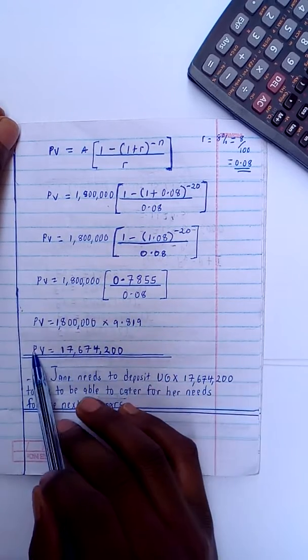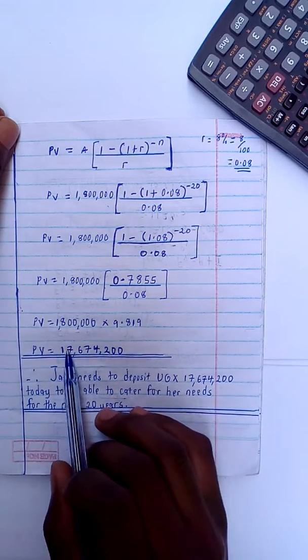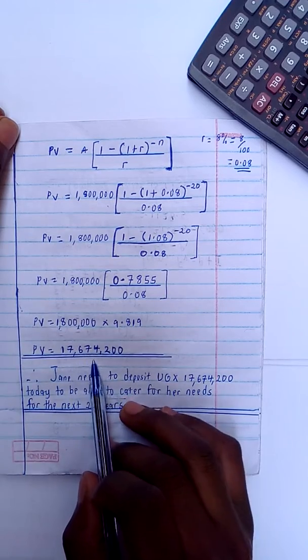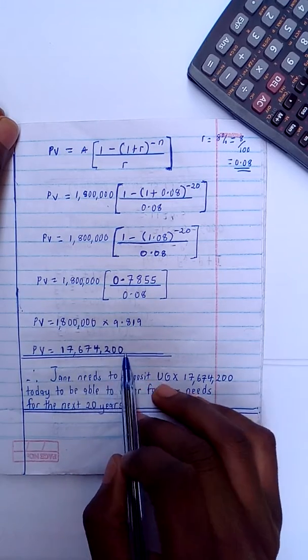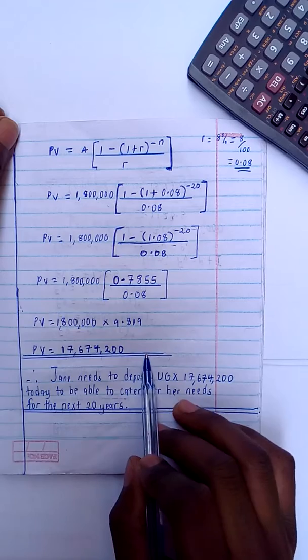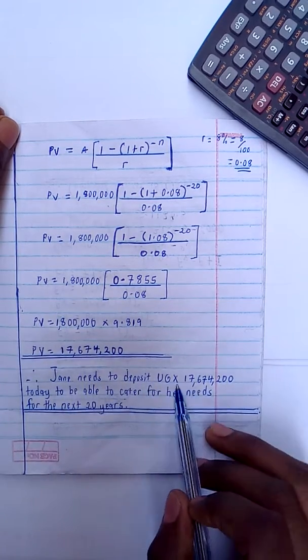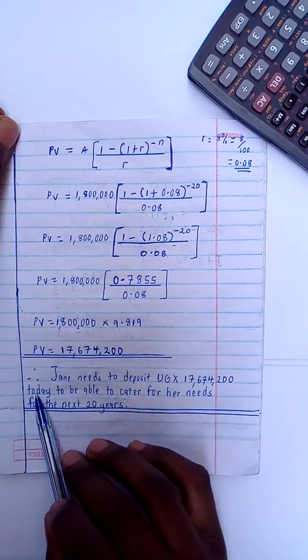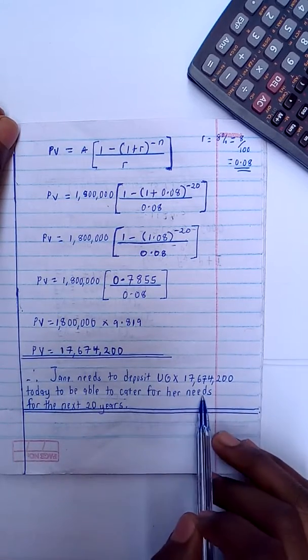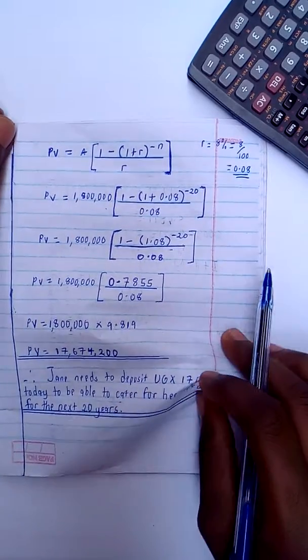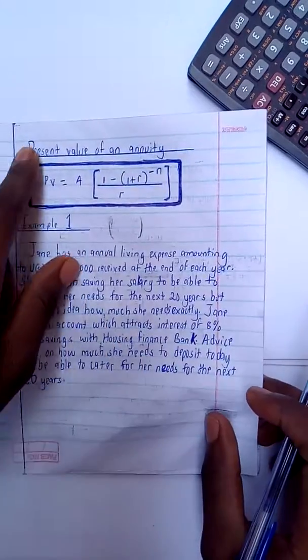So the 1.8 million times the answer which I've gotten, my PV is equal to 17,674,200. So this will be my answer. Therefore, Jane needs to deposit this amount today to be able to cater for her needs for the next 20 years.